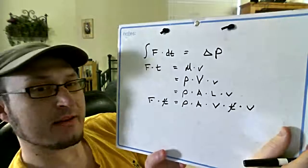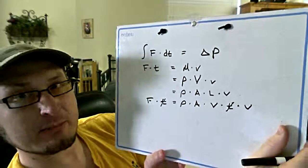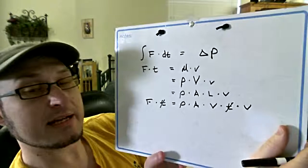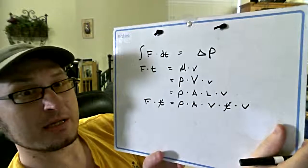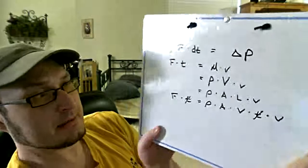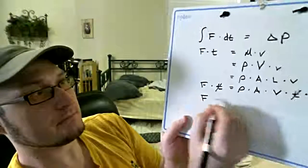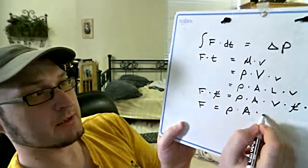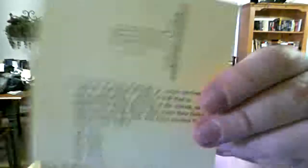But it's all, and it pops out right there. You get the density times the area times the velocity squared. And that's answer A.